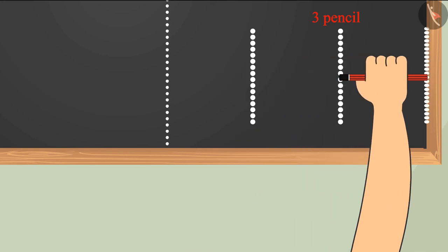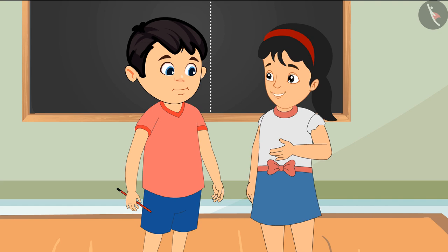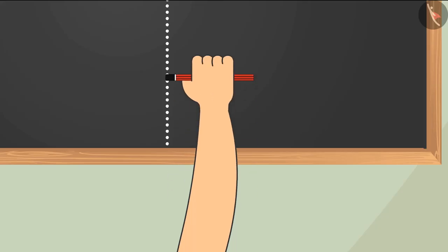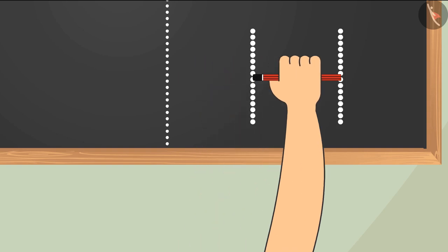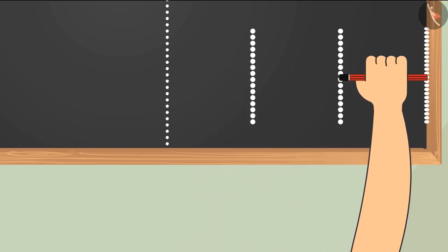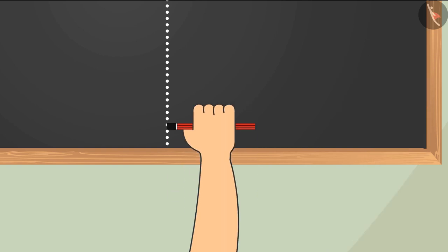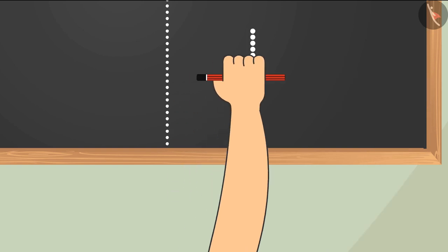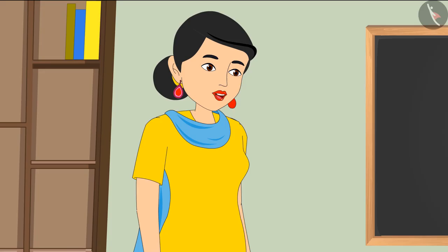'Children, do you think Pinky has properly measured her space? Yes, you thought right! Pinky has measured it correctly. This means Chotu's space is more than Pinky's space.' 'Come on, let me share your space equally.' Mother divided Chotu and Pinky's space equally between them.